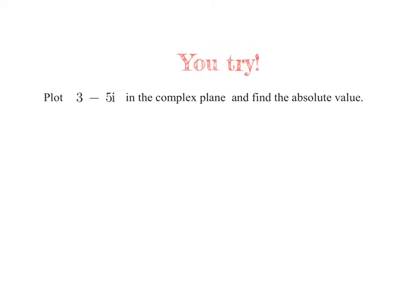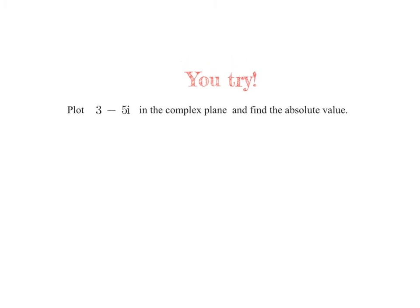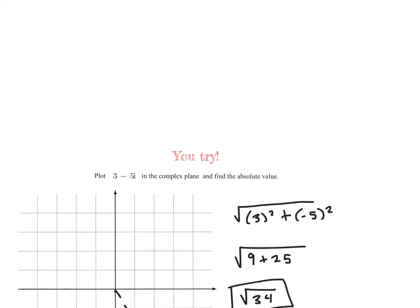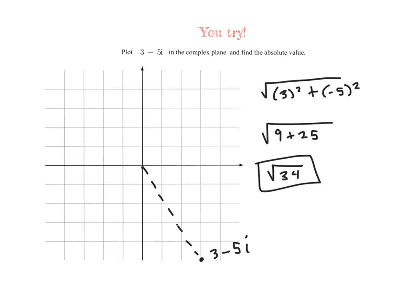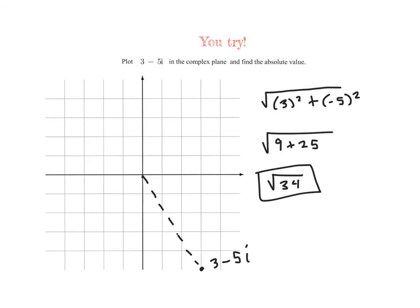Go ahead and pause the video and see if you can plot this complex number and find its absolute value. Check your answer here. It should be down in the fourth quadrant — 3 minus 5i — and your absolute value should be the square root of 34.